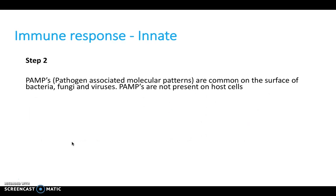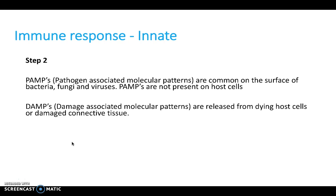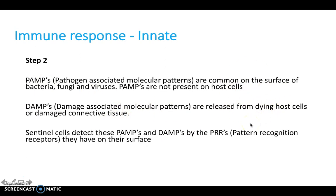Step two: PAMPs — pathogen-associated molecular patterns — are common on the surface of bacteria, fungi, and viruses. We don't have PAMPs on our normal host self-cells, so they're really recognizable as being foreign pathogens. There are also damage-associated molecular patterns (DAMPs), released from dying host cells or damaged connective tissue when invaded by a pathogen. Sentinel cells detect these PAMPs and DAMPs via pattern recognition receptors.